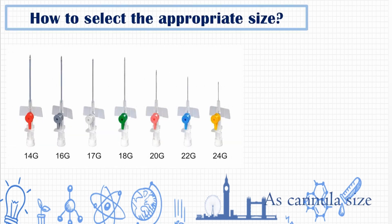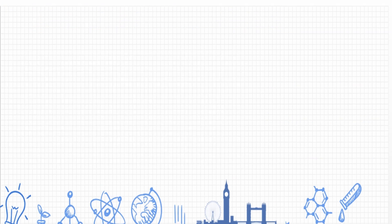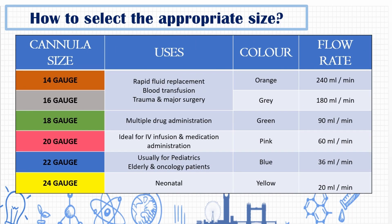Cannula size is important. As the cannula gauge increases, the needle size decreases. The 14 and 16 gauge are larger in size and are used for rapid fluid replacement and blood transfusion, especially for patients with shock, undergoing major surgery, and trauma — flow rate 240 to 180 ml per minute. The 18 gauge is commonly used for adult patients and can be used for multiple drug administration, including antibiotics, with a flow rate of 90 ml per minute.